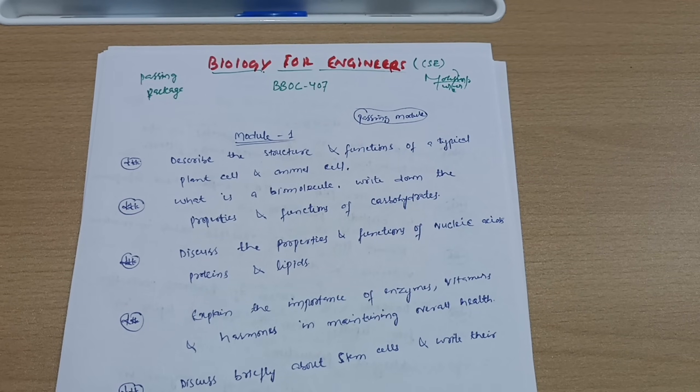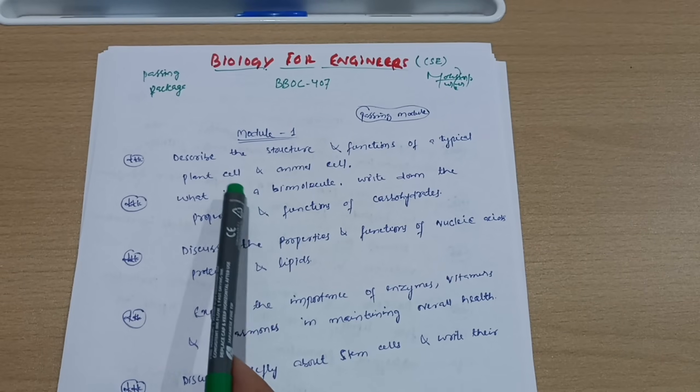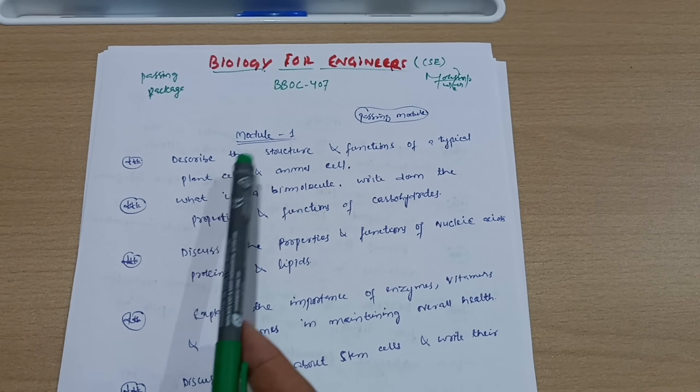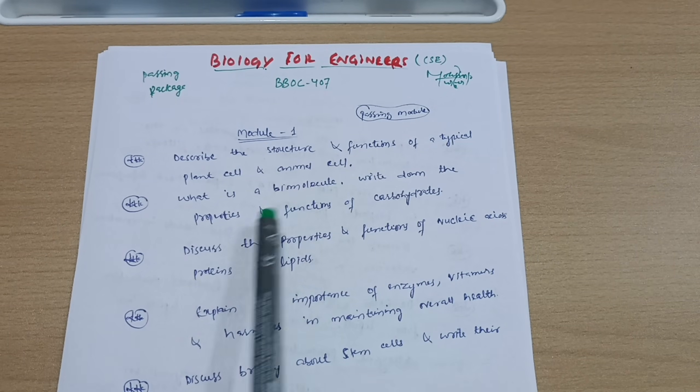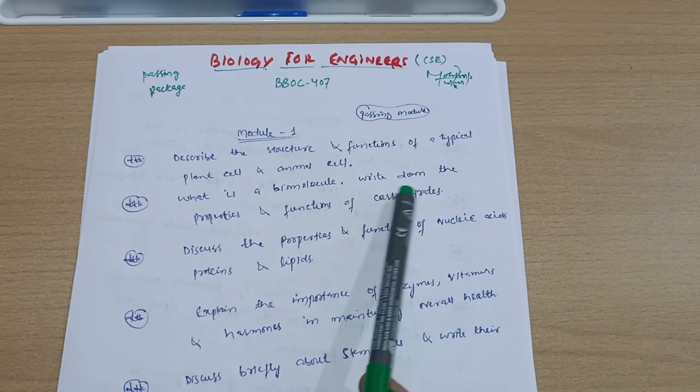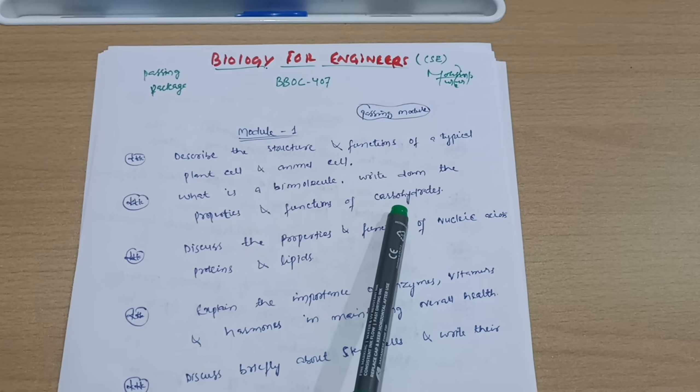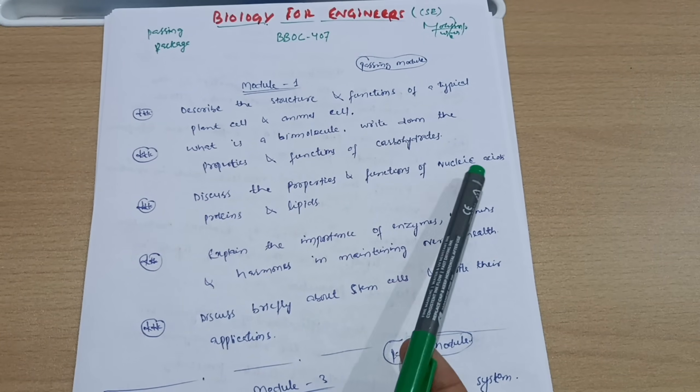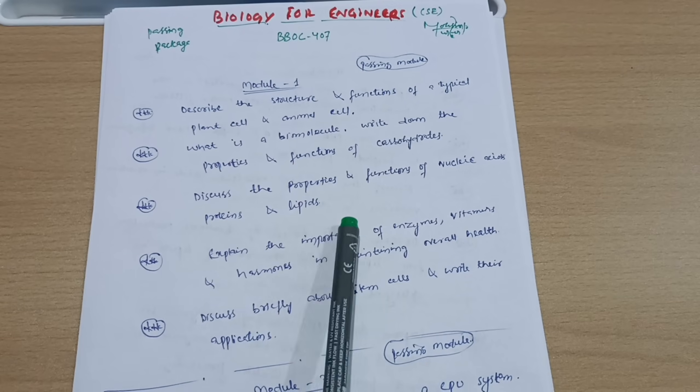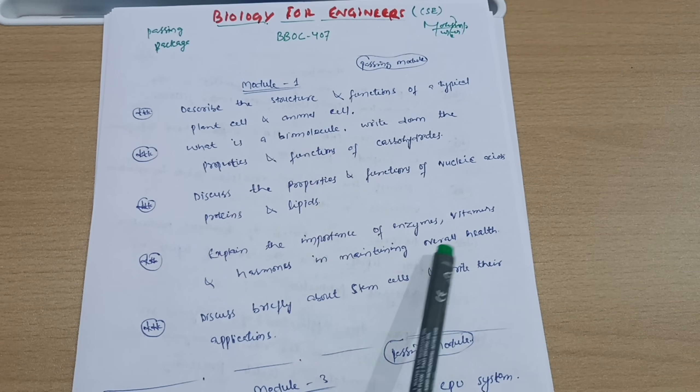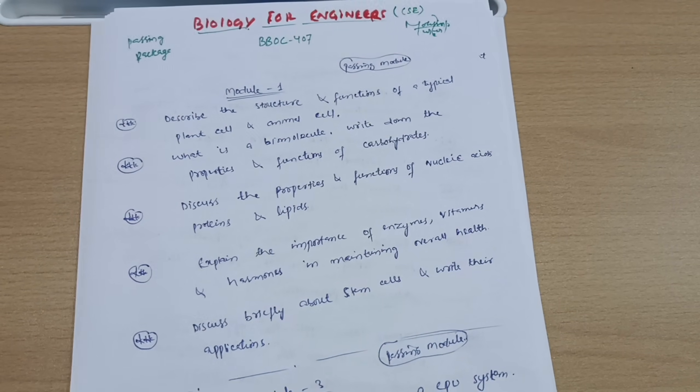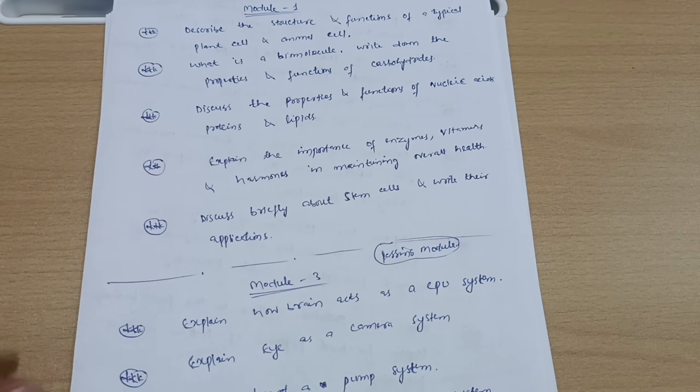Here is the passing module, Module 1. We have five questions you have to cover. Describe the structure and functions of a typical plant cell and animal cell. What is a biomolecule? Write down the properties and functions of carbohydrates. Discuss the properties and functions of nucleic acids, proteins, and lipids. Explain the importance of enzymes, vitamins, and hormones in maintaining overall health. And discuss briefly about stem cells and write their applications. This is all about Module 1—that's why I call it passing module, only five questions to cover.